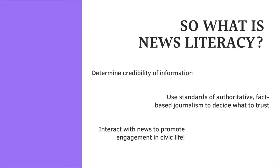As a journalist, you should seek truth and accuracy as much as possible. Independence — so you're not writing on behalf of special interests, whether that be political or commercial. You're writing in a balanced way, showing multiple sides of the story. You minimize harm to the communities that you are writing about, and you remain accountable and transparent and explain your ethical choices. Finally, being news literate allows you to interact with the news and promote your engagement in civic life, really figuring out what you want to act upon and what you really care about.